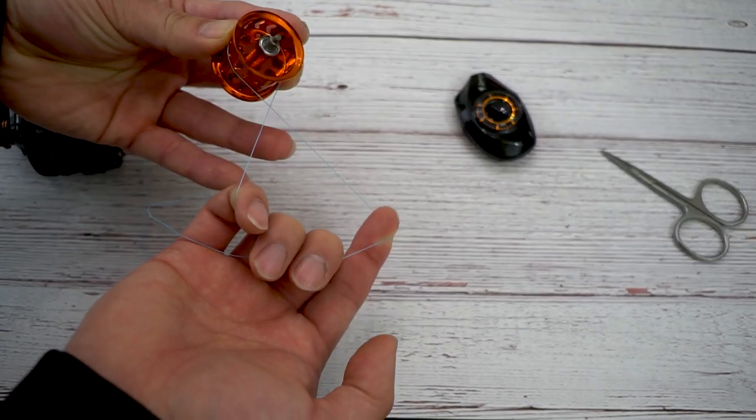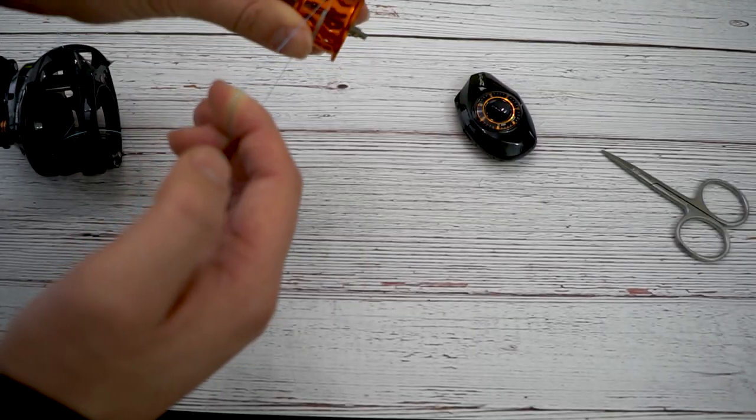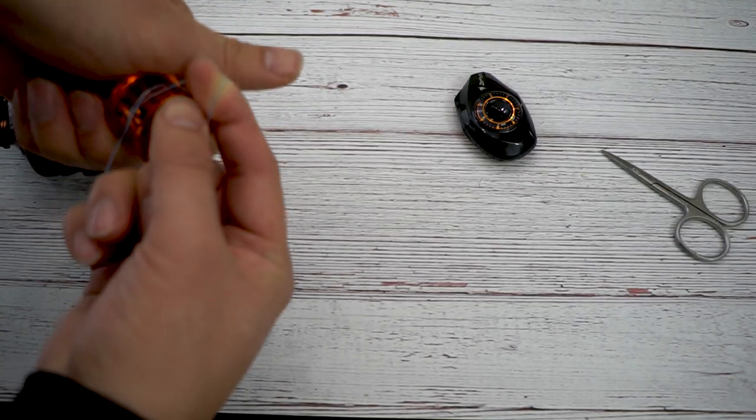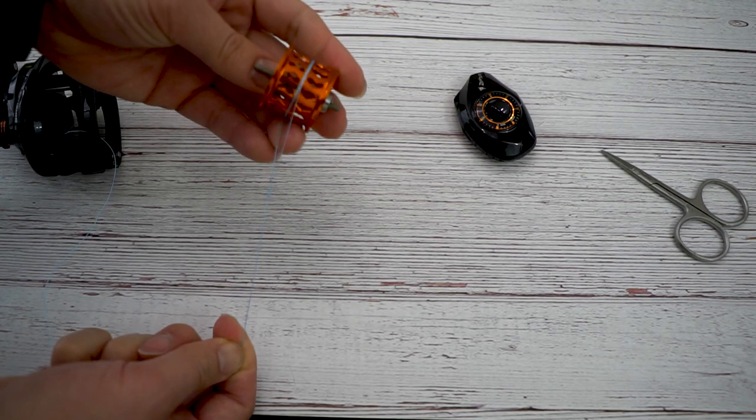Then you take that crossing, put it through the spool. And I like to cross the other way and do it one more time. So three times total, you have a total of three wraps onto your spool.